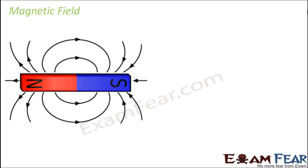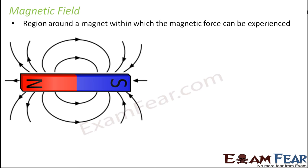Now comes the concept of magnetic field. Why is it that anything that comes near a magnet gets attracted? That is because in the region surrounding a magnet, there exists a force with which other objects get attracted. This region within which the effect of the magnet can be felt is known as the magnetic field.